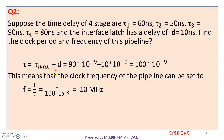The clock period is tau_max + D. Tau_max is the maximum stage delay = 90 ns. So T = 90 × 10⁻⁹ + 10 × 10⁻⁹ = 100 × 10⁻⁹ seconds. The clock frequency of the pipeline is f = 1 / T = 1 / (100 × 10⁻⁹) = 10 MHz.